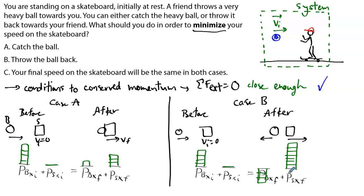So we can clearly see that the momentum of the skater will be larger in the second case, because the ball will now have negative momentum. So the change in momentum will be greater for the ball, which means that to compensate, the change in momentum of the skater will also be greater and the skater will end up with the bigger speed. So if our goal is to minimize the speed of the person on the skateboard, then the best option is to catch the ball.